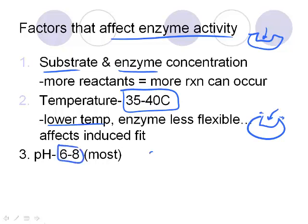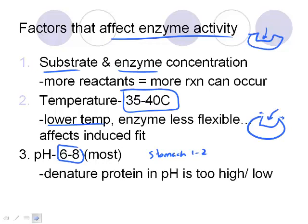The next factor is pH — this is probably the most important. Enzymes typically activate around pH 6 to 8, but pepsin in our stomach likes it around 1 to 2, so there's a big difference. If the pH is too high or too low, it can denature the protein, meaning the enzyme unravels. If that organized protein unravels into polypeptides, it won't have any function and can't fit the substrate into the active site.